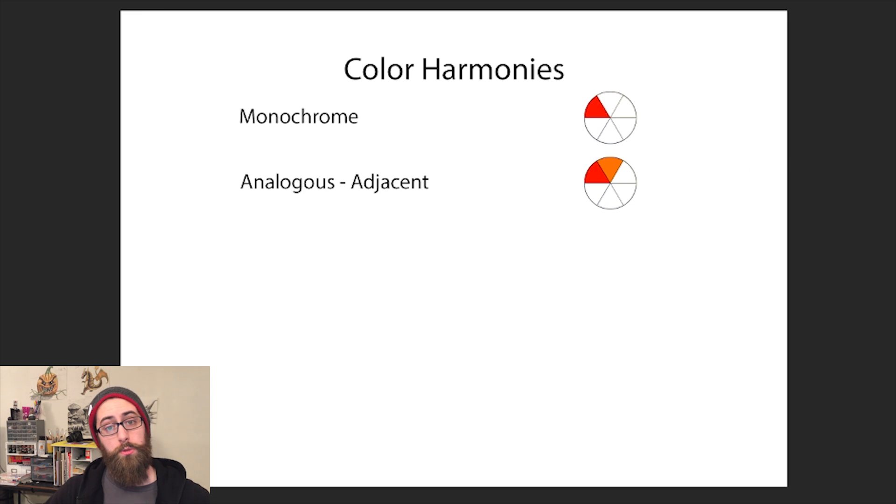Analogous: two colors that are next to each other on the color wheel. Triadic: three colors with equal distances. In more complicated color wheels you have many more options.